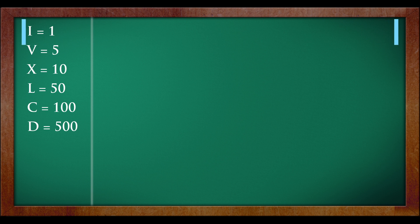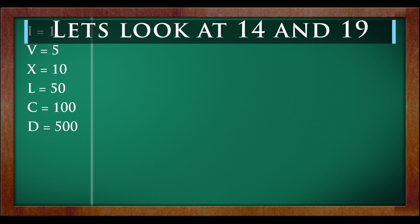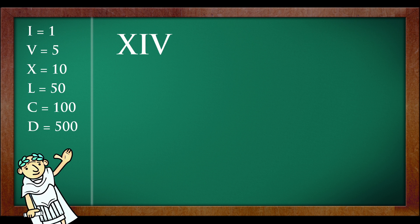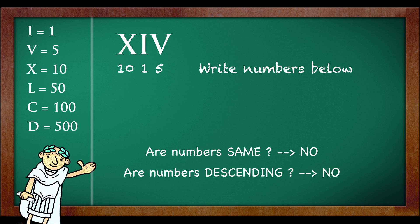14 and 19 are interesting. XIV is 14. Let me tell you why. So, first write the numbers below: 10, 1, 5. Okay, is this same? No. Is this descending? No. Is this ascending? No.